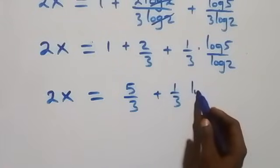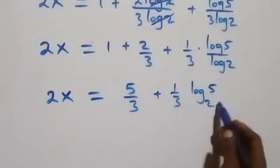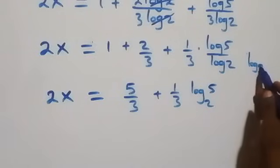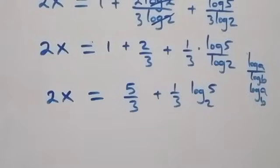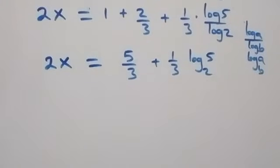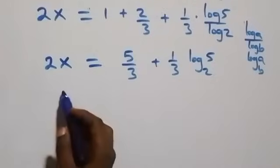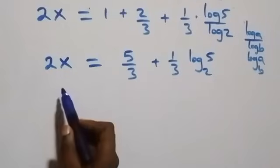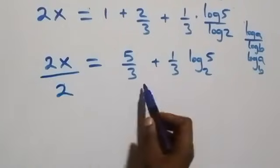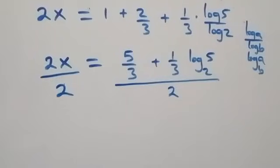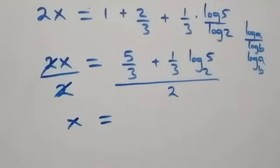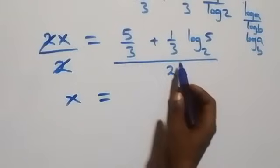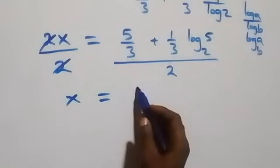Applying change of base from log a over log b, which we can write as log a to base b. That is, from here we have log 5 over log 2 which equals log 5 to base 2. Then we divide through by 2 to cancel — divide there by 2 and also divide this side by 2. Two here cancels each other and we have x now equals to 5 over 3 plus 1 over 3 log 5 to base 2 over 2.